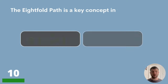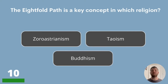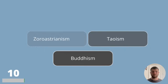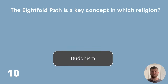Question 10. The Eightfold Path is a key concept in which religion? The answer is Buddhism.